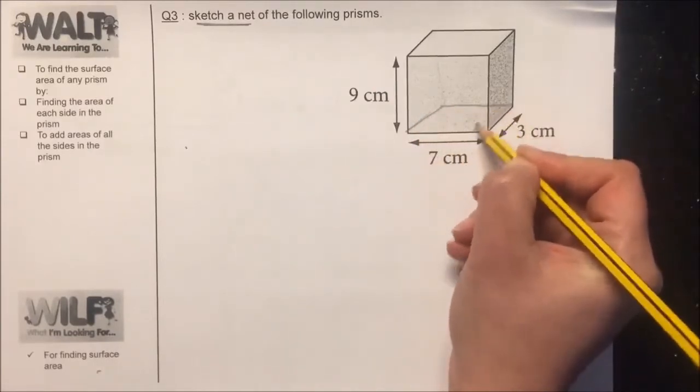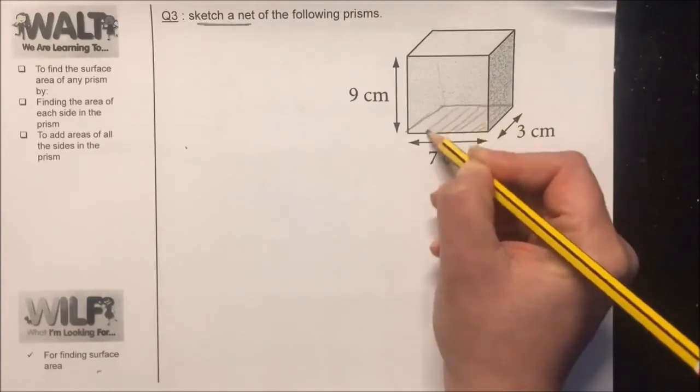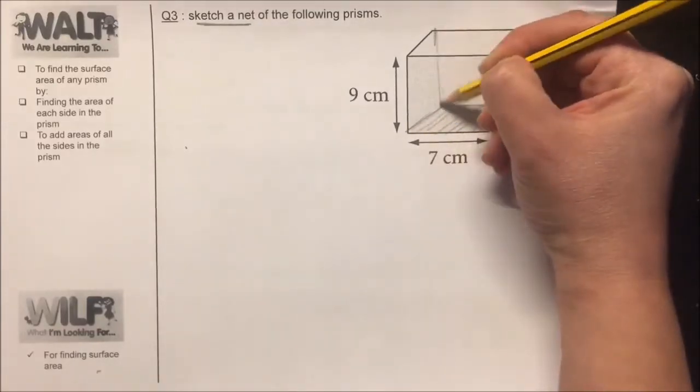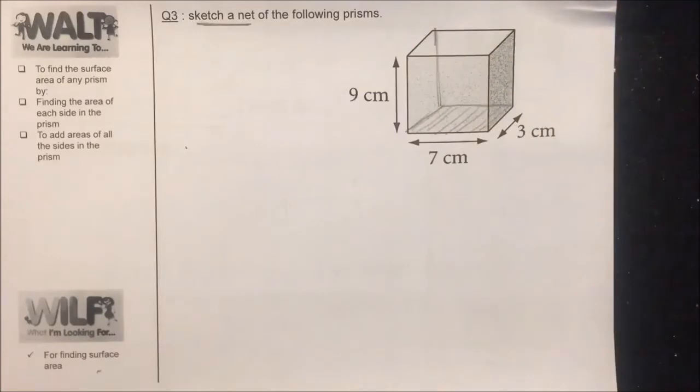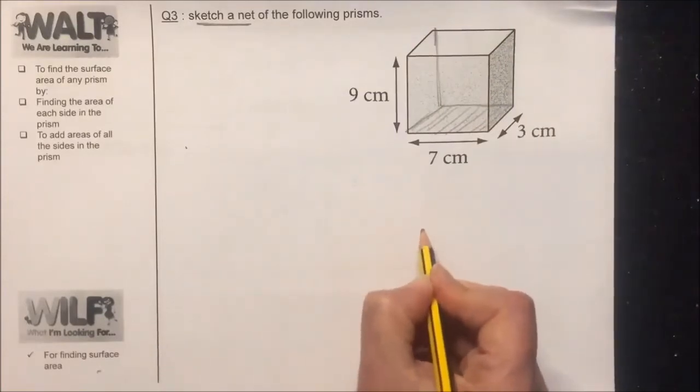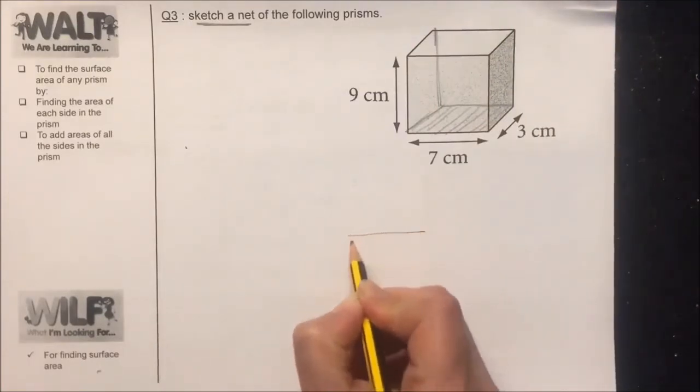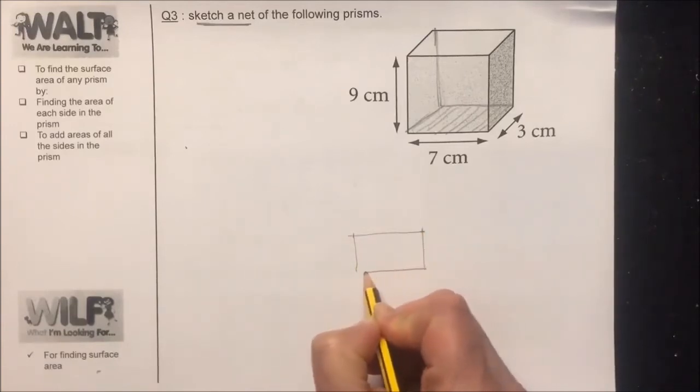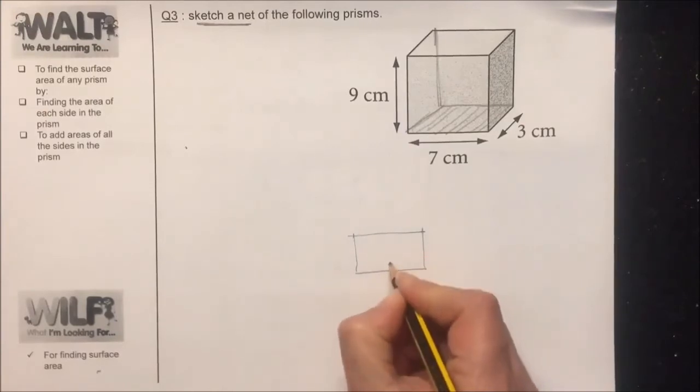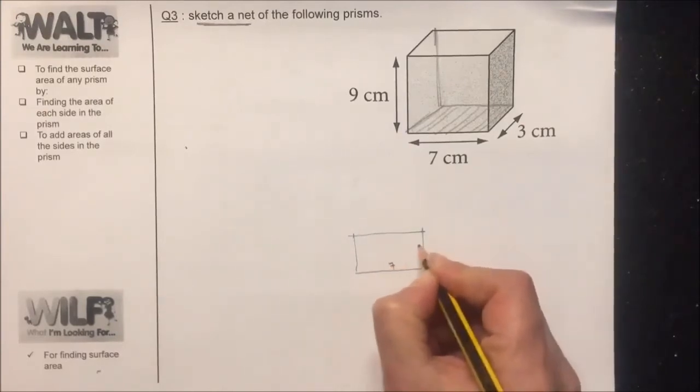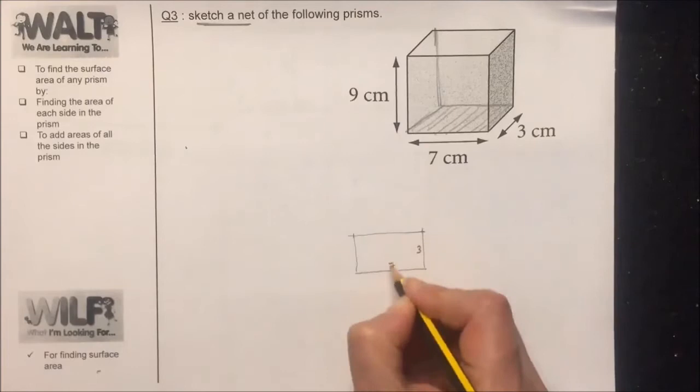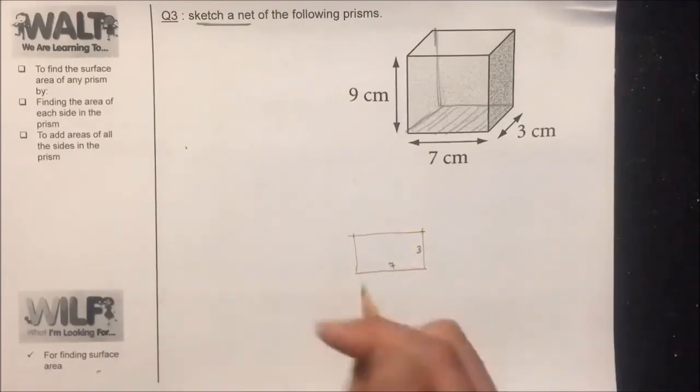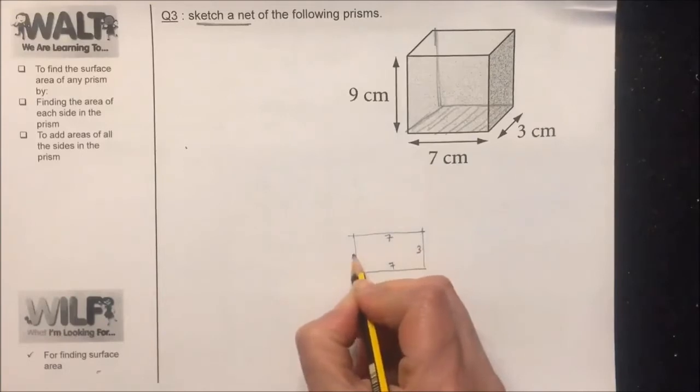So it is a rectangle. Let's imagine that this is how it looks like. The most important thing when you draw this is write the dimensions, so this is the 7, this is the 3. Every two opposite sides in a rectangle are equal, so this is 7, this is opposite to this side, so it is 3 as well.